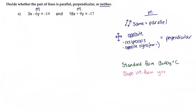We can take standard form and put it into slope-intercept form, which looks like y equals mx plus b, where m is our slope. So all we need to do to change standard form into slope-intercept form is to solve for y. In the first equation, the first thing I'm going to do is subtract 3x from both sides, leaving me with negative 6y equals negative 14 minus 3x.